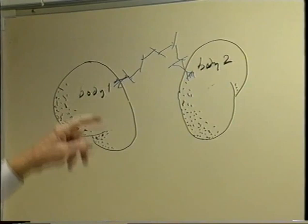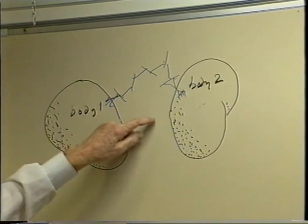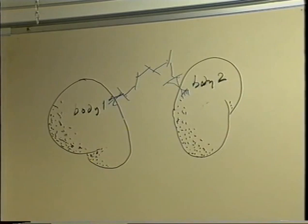Body two has its freedom reduced from six to five relative to body one. If I were to add a second chain with five joints, that will reduce the freedom one more — to four. A third chain would reduce it to three. And it is that particular arrangement we are interested in: two bodies connected together, each connecting chain having five single-freedom joints.